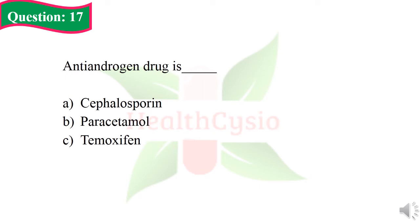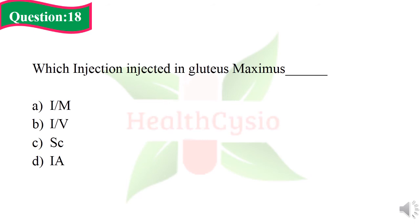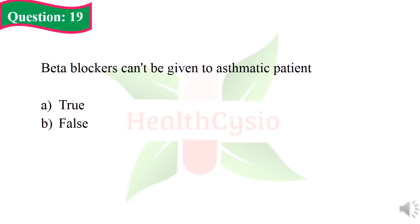Question 17: Anti-androgen drug is dash. Option A: cephalosporin. Option B: paracetamol. Option C: tamoxifen. The right answer is Option C, tamoxifen. Question 18: Which injection is injected into the gluteus maximus? Option A: intramuscular. Option B: intravenous. Option C: subcutaneous. Option D: intraarticular. The right answer is Option A, intramuscular. Question 19: Beta blockers cannot be given to an asthmatic patient. Option A: the given statement is true. Option B: the given statement is false. The right answer is Option A, true.